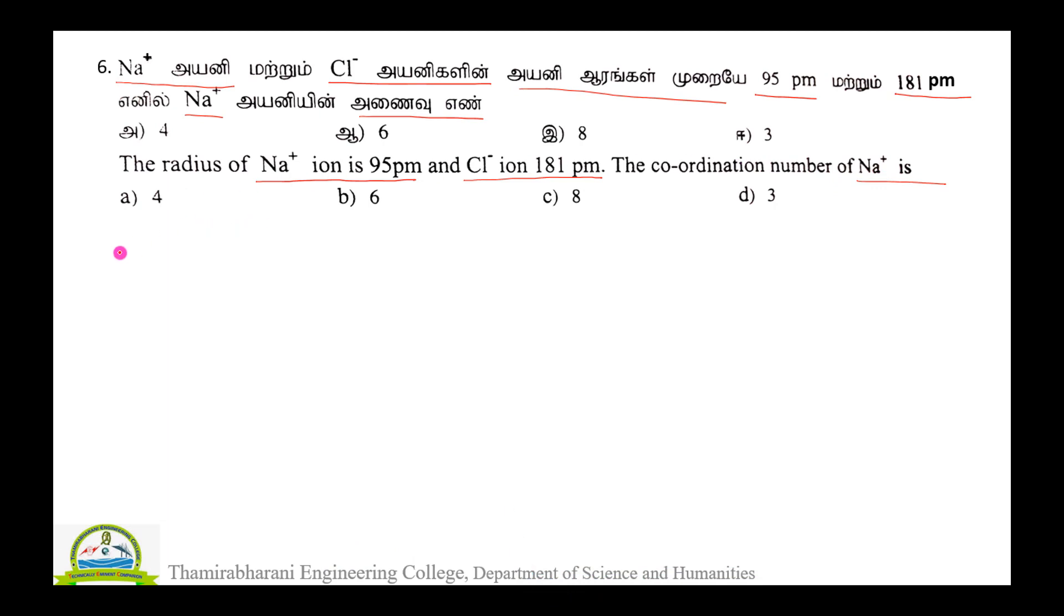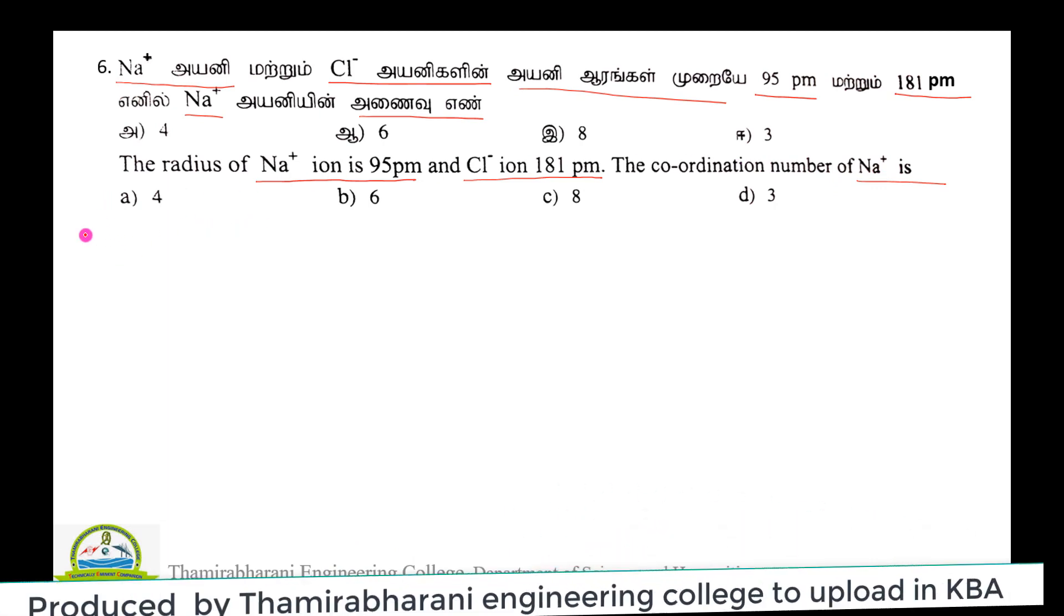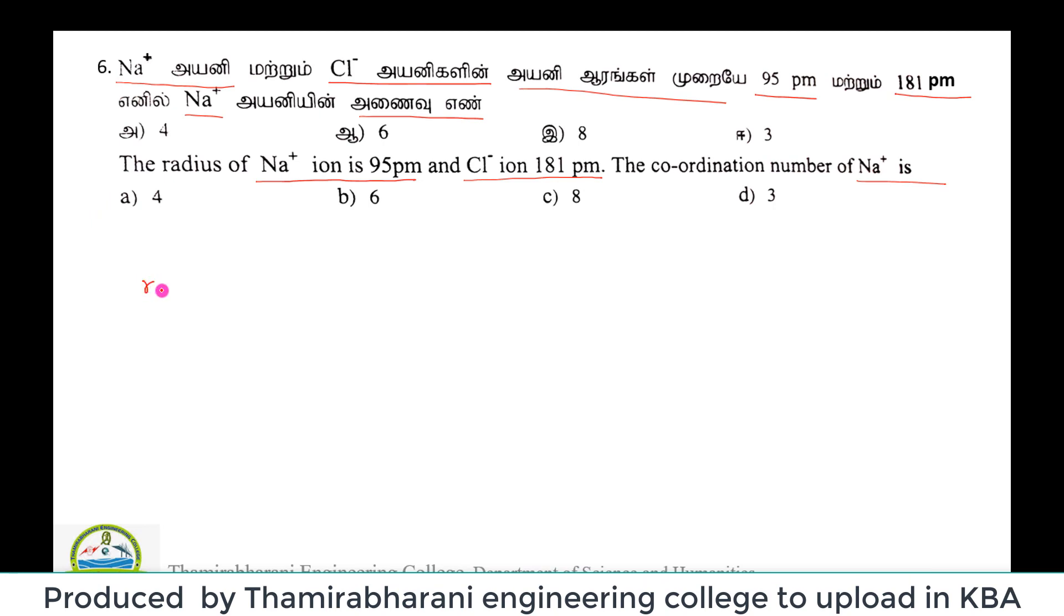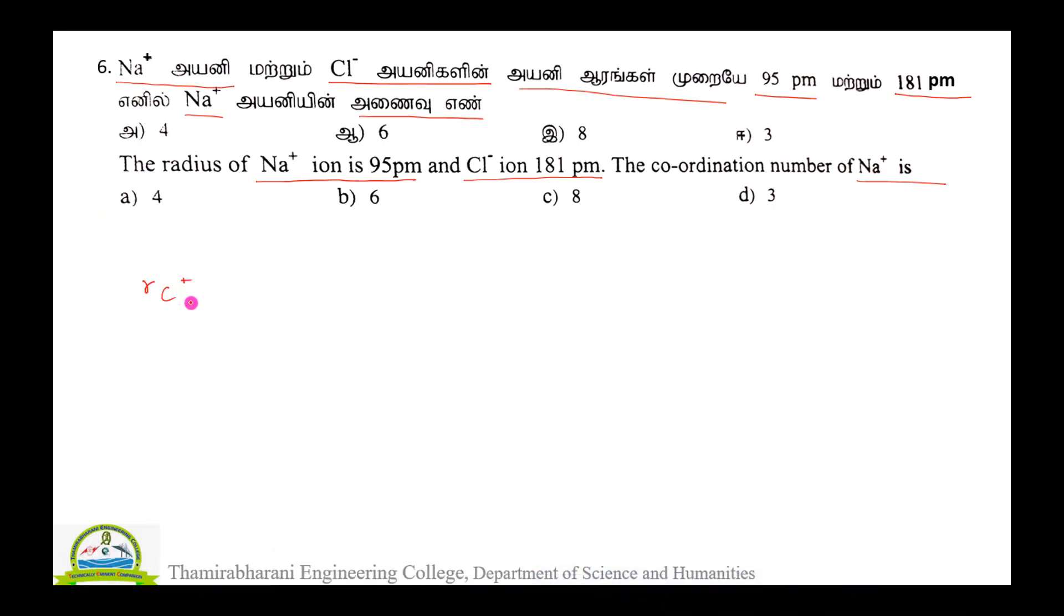To calculate this, on what basis? We need to calculate radius ratio. So radius ratio, how to calculate? First, the formula is: radius of cation by radius of anion.